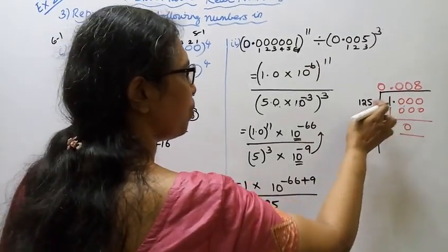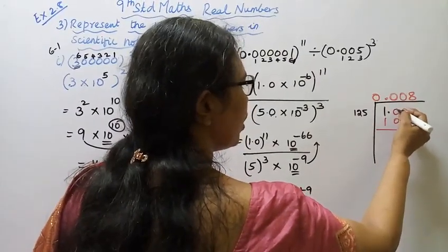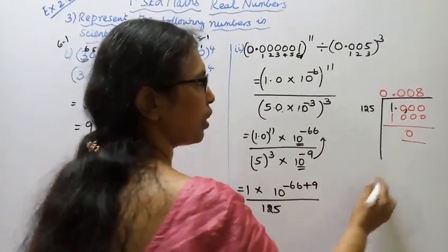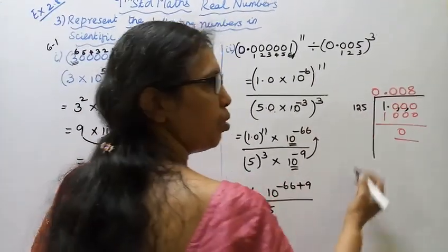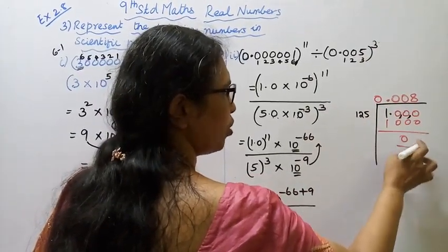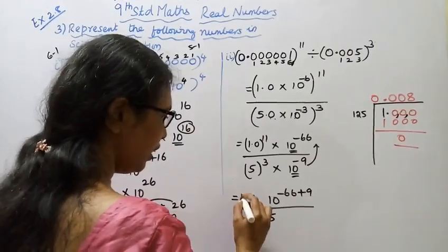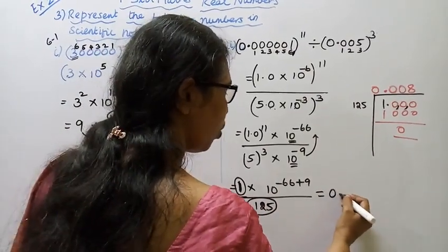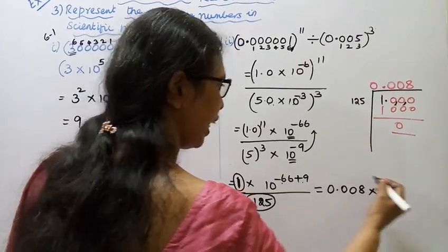Dividing: 1 divided by 125 gives 0.008. The powers of 10: minus 66 minus (minus 9) equals minus 66 plus 9 equals minus 57. So we get 0.008 into 10 to the power of minus 57. But this is not in proper scientific notation, so we need to convert 0.008.